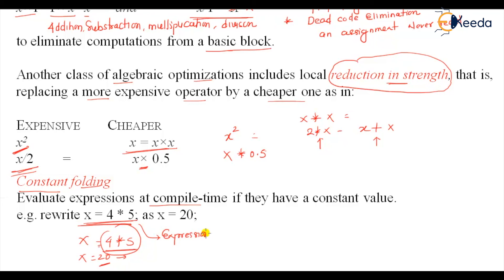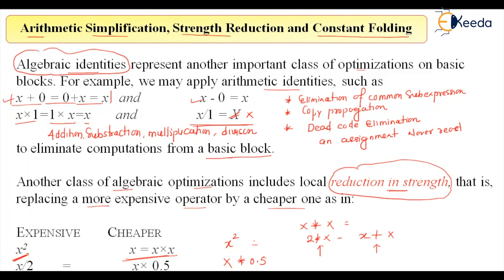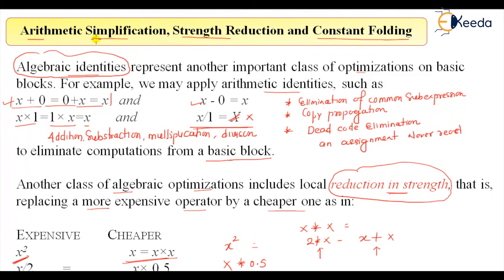So these are the three different categories of arithmetic simplification, strength reduction, and constant folding. And mainly we talked about algebraic identities and reduction in strength. So we can add here two more points: these are the arithmetic simplification, algebraic identities and constant folding. That's all for this discussion, thank you.